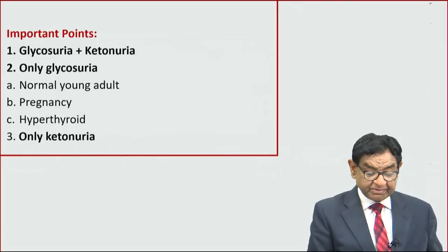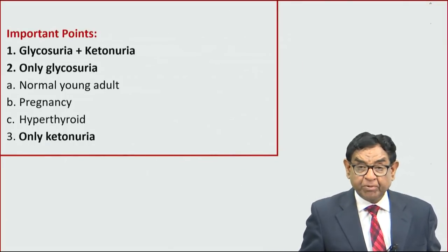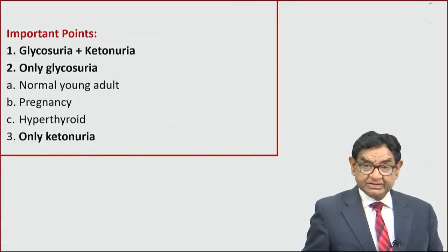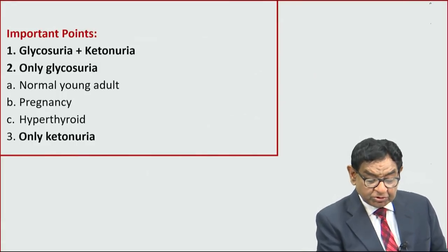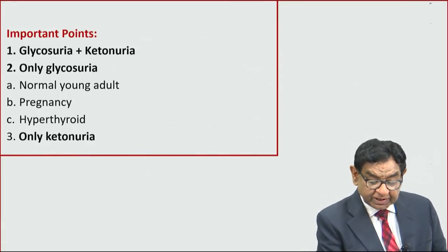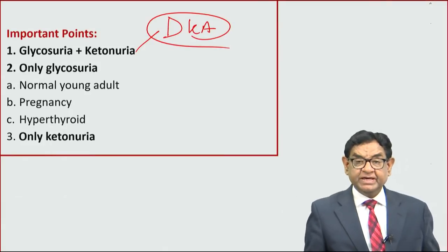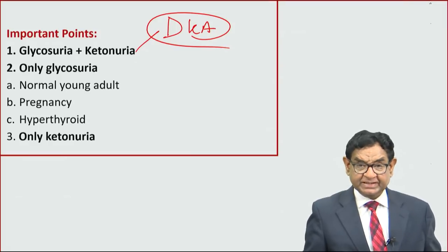Some important basic concepts: glycosuria and ketonuria — this combination is seen only in DKA, or you can say it is seen only in diabetes. It is not seen anywhere else.